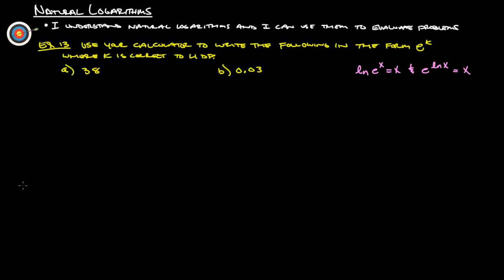Last quick example here. We've got example 13. Use your calculator. Write the following in the form E to the K, where K is correct to four decimal places. So we've got 38. So we want to write this in E to the K form. So we're going to use this one over here. So if this is our X, 38 is X, we get that's the same thing as E to the LN of 38. And there we go. So all we have to do really is figure out what the natural log of 38 is.